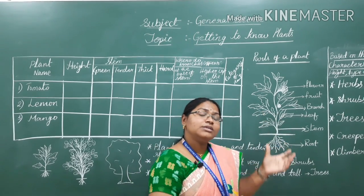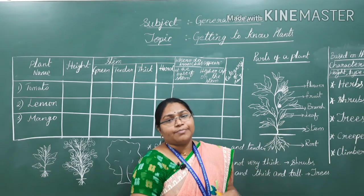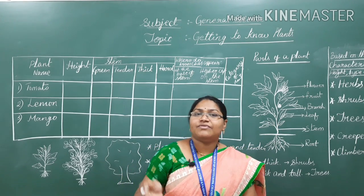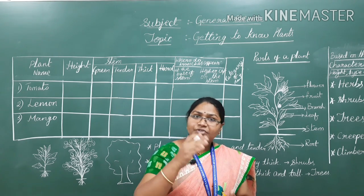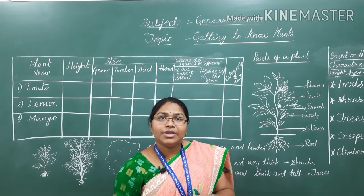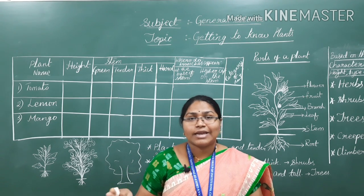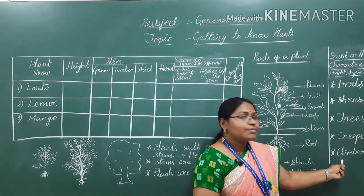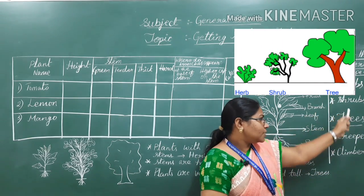The plant parts are the same for every plant, but the height of the plant, the type of stem, and where branches appear will be different for each plant. Based on these characters — the type of stem, height of the plant, and where branches appear — we can differentiate plants into three major categories: herbs, shrubs, and trees. Creepers and climbers can also be included, but the three main categories are herbs, shrubs, and trees.